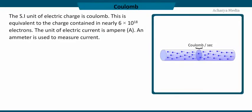The SI unit of electric charge is coulomb. This is equivalent to the charge contained in nearly 6 into 10 to the power of 18 electrons. The electric current is expressed by a unit called ampere, named after the French scientist. An instrument called ammeter is used to measure current in a circuit.